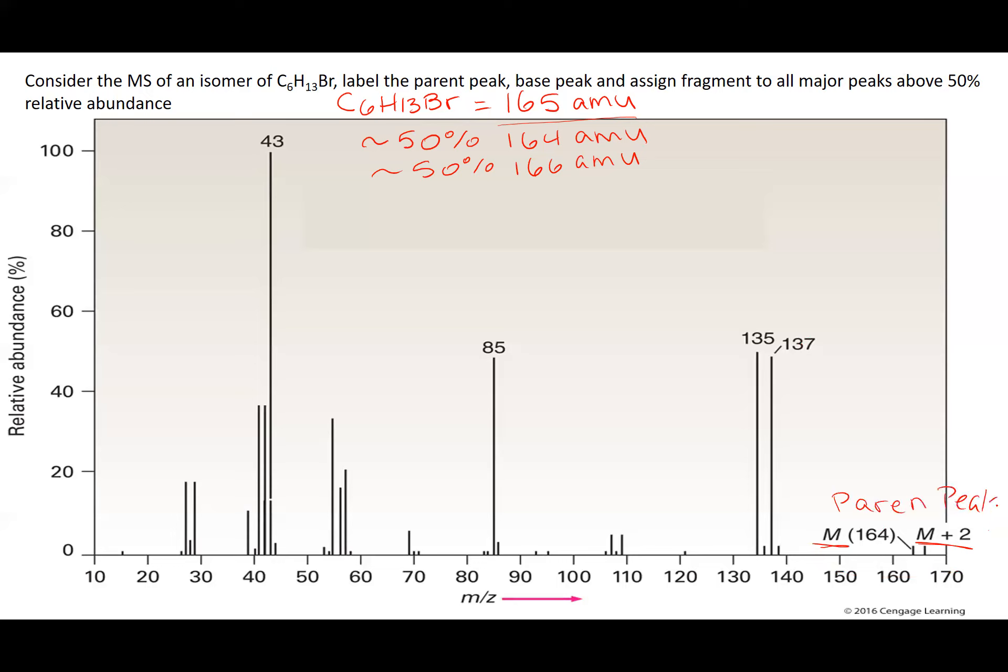We call them the parent peaks because some of the molecules have bromine 79 and some of them have bromine 81, so they have different masses. And then here's my base peak, which is the tallest peak.